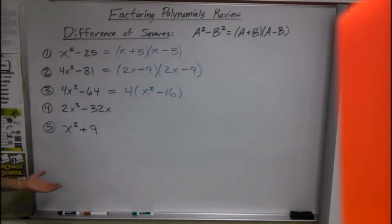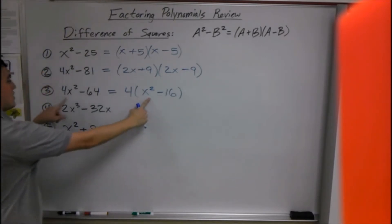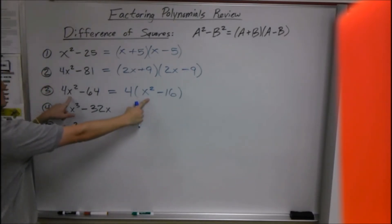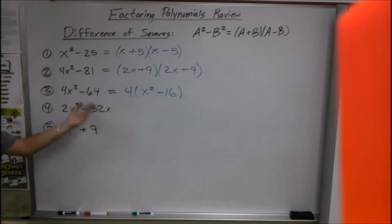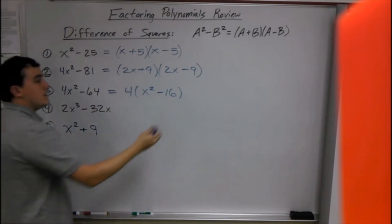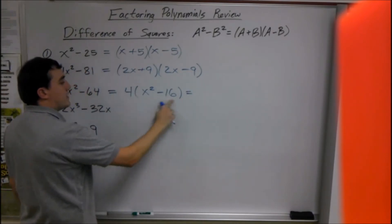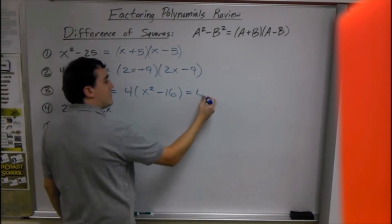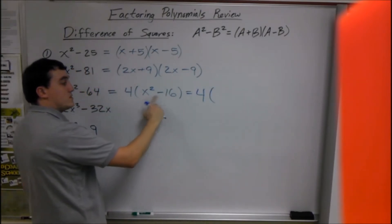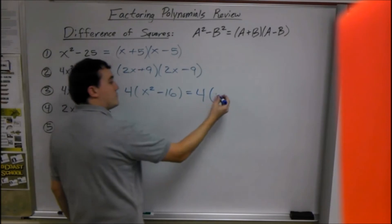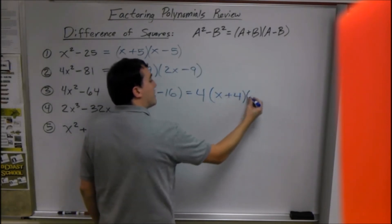Take out your greatest common factor — you should be able to multiply to get back: 4 times x² is 4x², 4 times 16 is 64. Now we can factor the remaining part. The 4 stays out front, and the square root of x² is x, the square root of 16 is 4, so we get 4(x + 4)(x - 4).